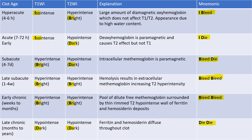You can go through this table. On the left side you have the clot age. Clot age can be: hyperacute — four to six hours; acute early — seven to 72 hours; subacute — four to seven days, which is our MCQ; late subacute — one to four weeks; early chronic — weeks to months; or late chronic — months to years.